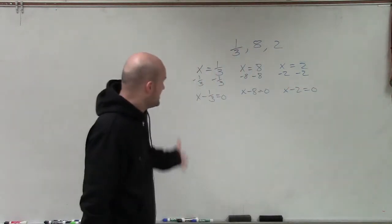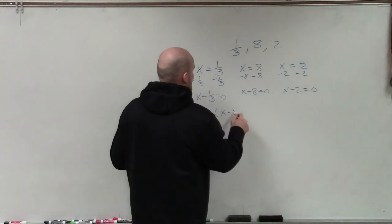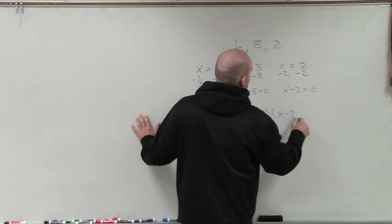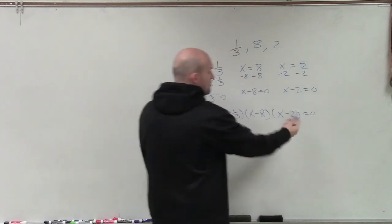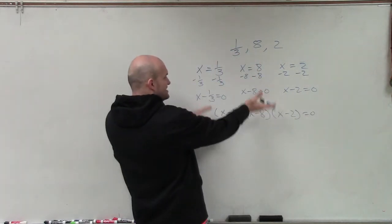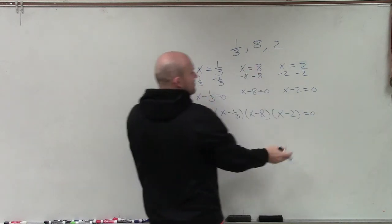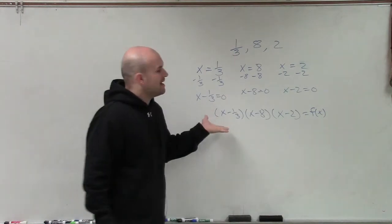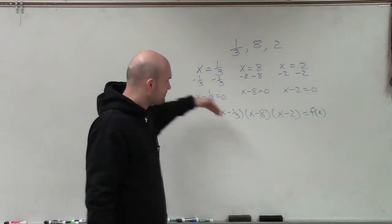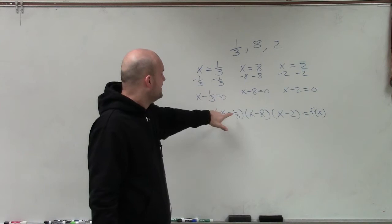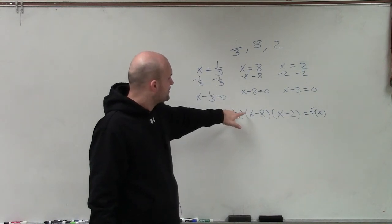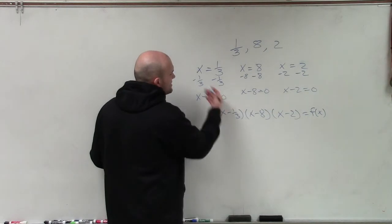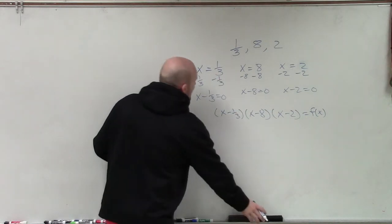So that becomes the case, but then what you're going to do is you're going to multiply x minus 1/3 times x minus 8 times x minus 2 equals 0. And we multiply all these not to set them equal to 0, but that's how we got to that point if we are working this problem backwards. So we're going to set that equal to f of x. But the problem is if I multiply by 1/3 in this factor, my issue that I'm going to have now is that I'm going to have fractions as my coefficient.